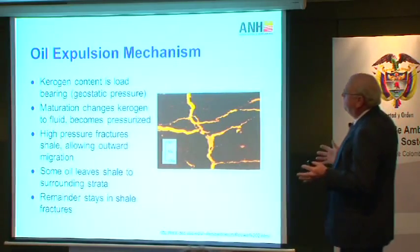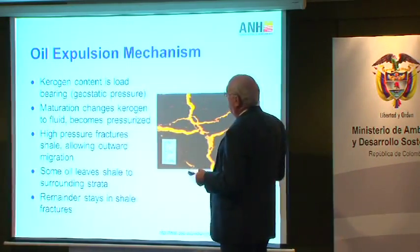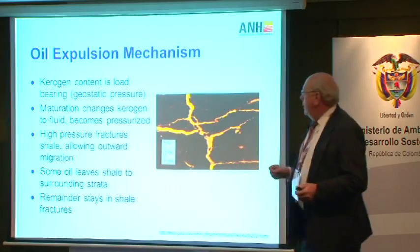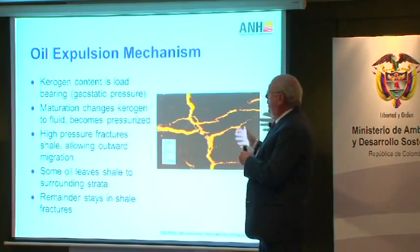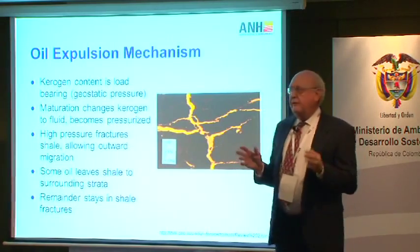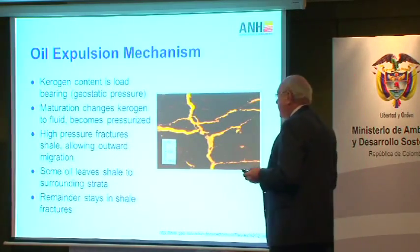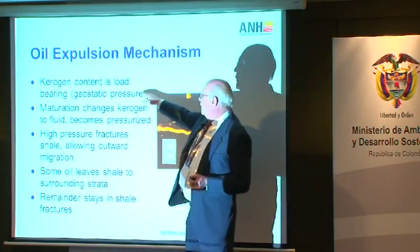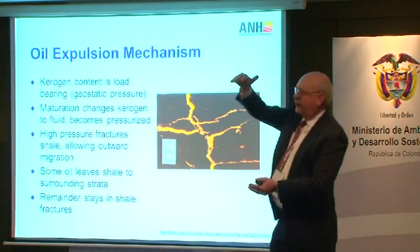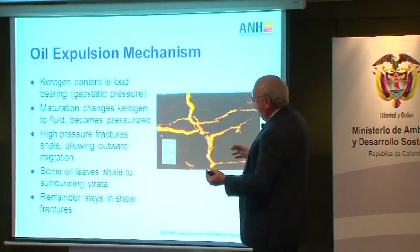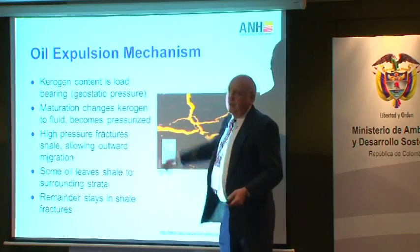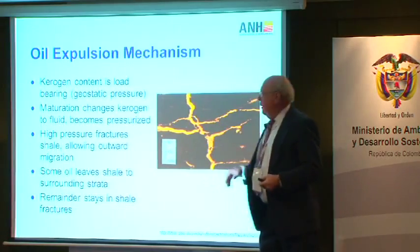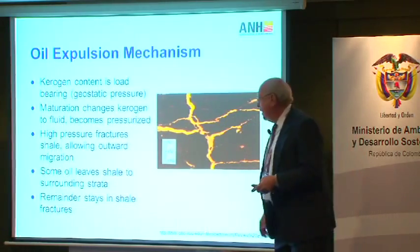What happens as far as how the oil gets out of the shale: it's believed that the kerogen, which is a solid matter, as it is converted with increasing temperature to oil, it turns into a liquid. This liquid bears some of the geostatic pressure of the overlying layers of sediment. Since it's no longer a solid, it becomes a very highly pressured liquid. It's believed that this liquid under high pressure forms fractures in the shale and allows the oil to migrate out of the shale.